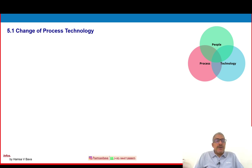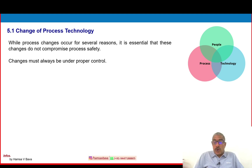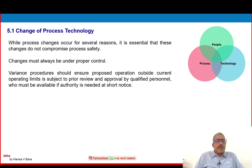These are the key areas that management of change should address, including contingencies for emergency changes. Management of change has some sub-elements. Let us discuss one by one. 5.1 is change of process technology. While process changes occur for several reasons, it is essential that these changes do not compromise process safety. Any change we make in the plant or operation facility should not compromise process safety — that is very important. Changes must always be under proper control, based on company policy, operating procedures, health, safety and environment. Variance procedures should ensure that proposed operations outside current operating limits are subject to prior review and approval by qualified personnel who must be available if authorization is needed at short notice.